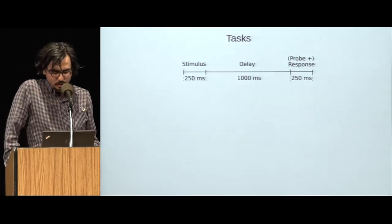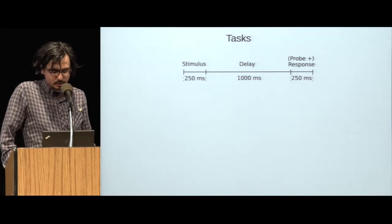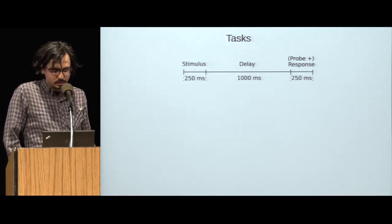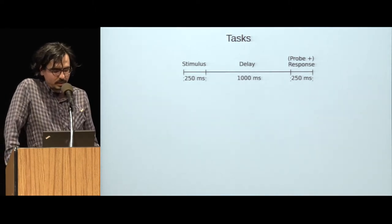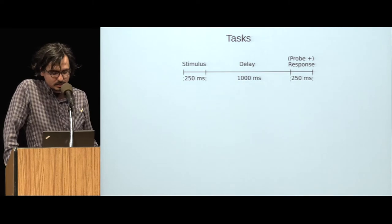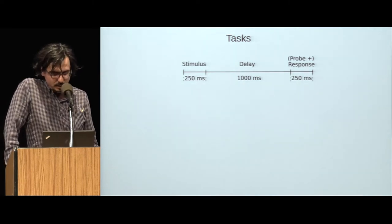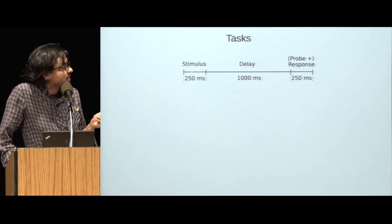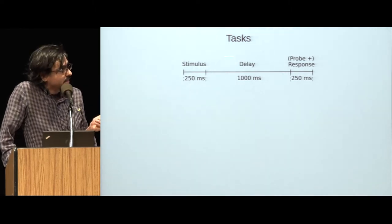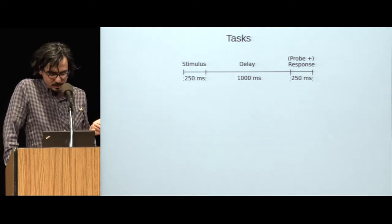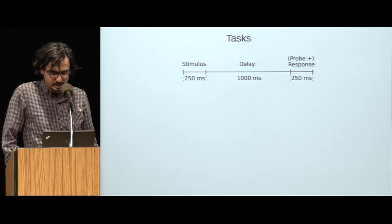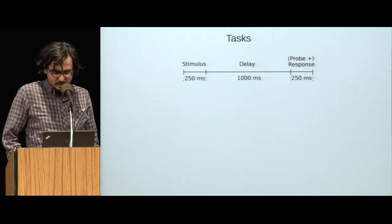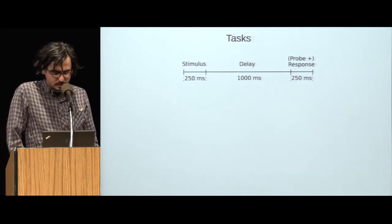First, I want to talk about the tasks that we considered. We have trained our networks on four main tasks that rely on short-term memory. All our tasks shared a common trial structure, which is shown here. Each trial starts with a stimulus period, and there's a delay, and then there's a response period. In some tasks, another stimulus or cue might appear during this last period. In that case, the target response depends on the second stimulus or cue.